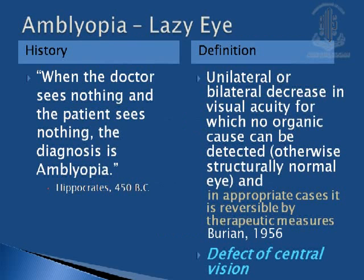Historically, amblyopia has been described very simply as when the doctor sees nothing and the patient sees nothing, the diagnosis is amblyopia. Later, the definition was reconsidered and it was defined as unilateral or bilateral decrease in the visual acuity for which no organic cause can be detected in an otherwise structurally normal eye, and which in appropriate cases can be reversed by therapeutic measures. It is a defect of central vision.